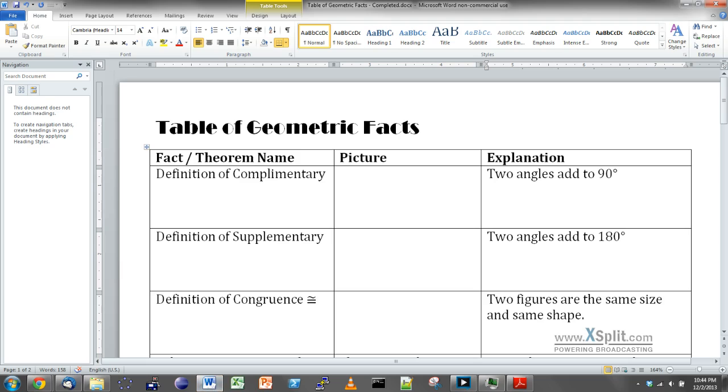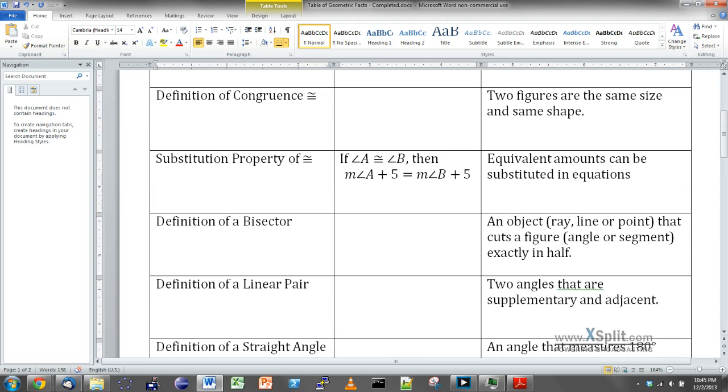Jumping right into it, over the last several weeks here, the last several months, we've had several reasons of why we can prove certain things. There are several things we've gone over, like definitions of complementary and supplementary, that the angles add up to 90 or 180. Definition of congruence, that two shapes are the same size and shape. Substitution property of congruence, essentially that if you have angle A and B that are congruent to each other, you can substitute angle A for angle B pretty readily.